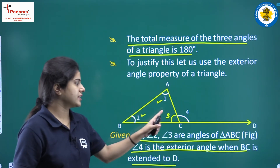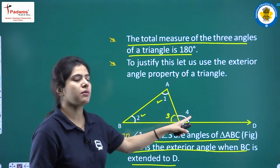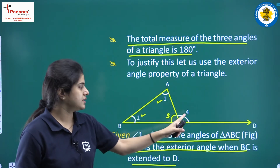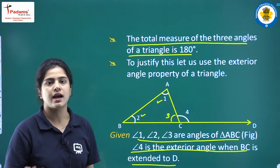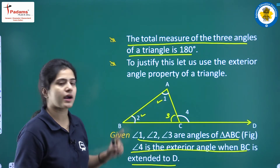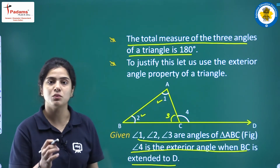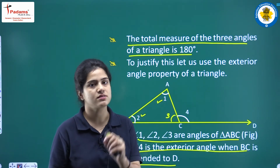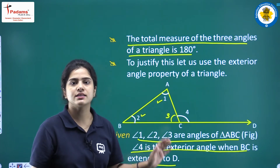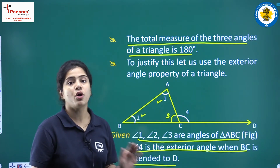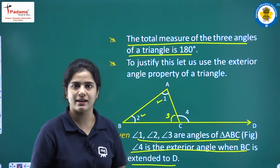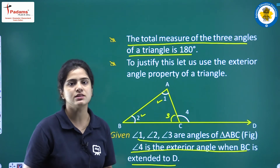Now, this exterior angle 4 is equal to the sum of the two opposite interior angles — that is, angle 1 plus angle 2 — by the exterior angle property. The exterior angle property states that the sum of two opposite interior angles equals the exterior angle.